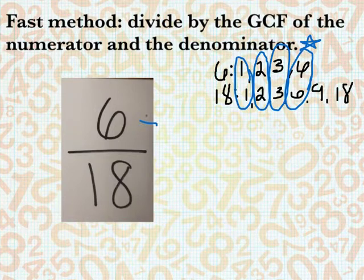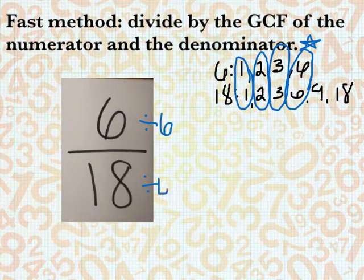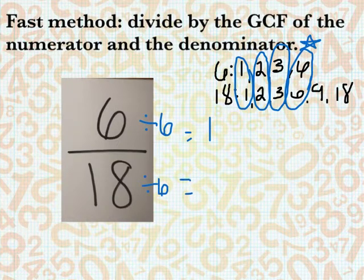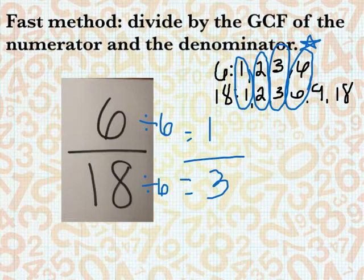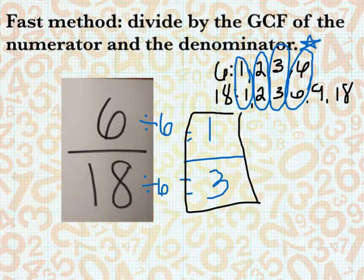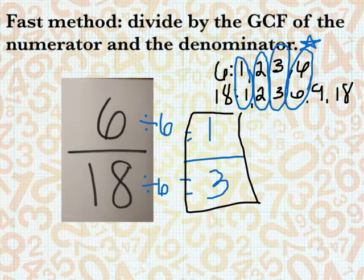So if we do 6 divided by 6 and 18 divided by 6: 6 divided by 6 is 1, 18 divided by 6 is 3. And that is our most simplified. We have 1 up at the top as well as they cannot be divided any further. We are able to do it in one step and that's why we call it the fast method.